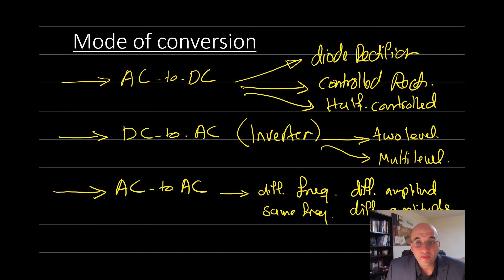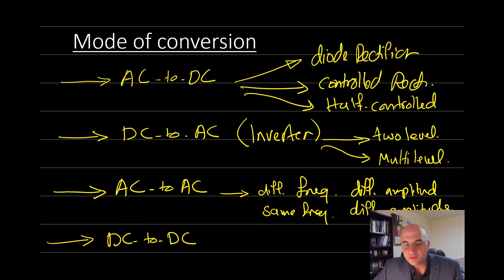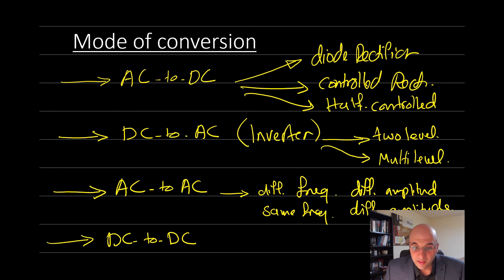The fourth category is DC to DC converters. These include traditional non-isolated DC-DC converters, switch mode power supplies for isolated converters, and solid state transformers. This covers converting power from one DC form to another — what we generally call single-stage power conversion. Solid state transformers should be noted separately, as they use multi-conversion stages.